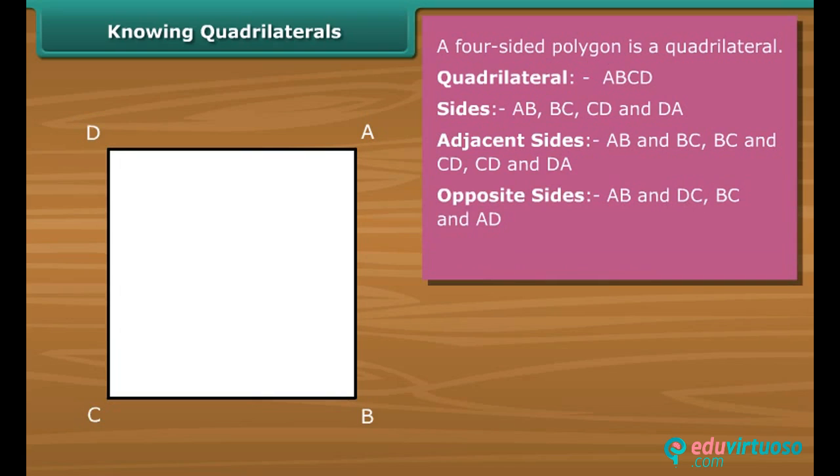The four vertices of quadrilateral ABCD are A, B, C and D. Among them A and C, B and D are opposite vertices.